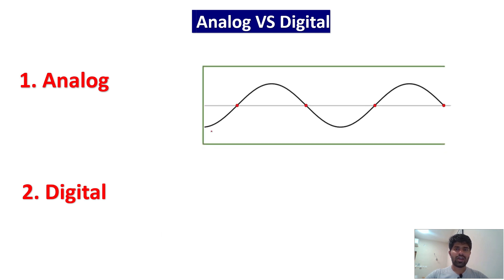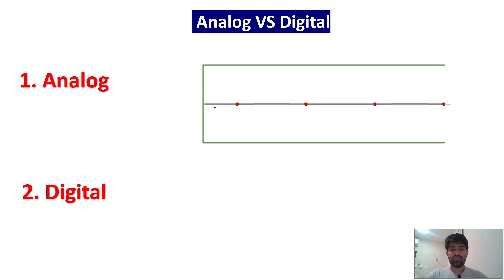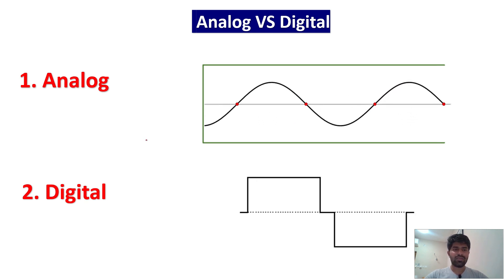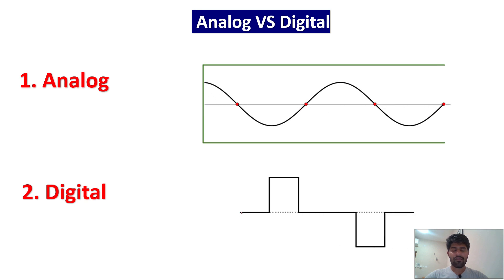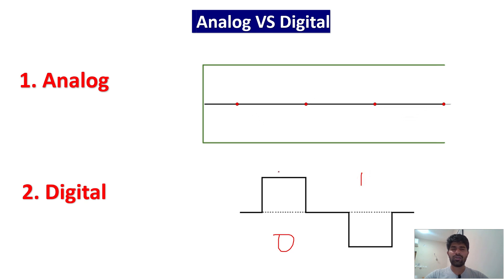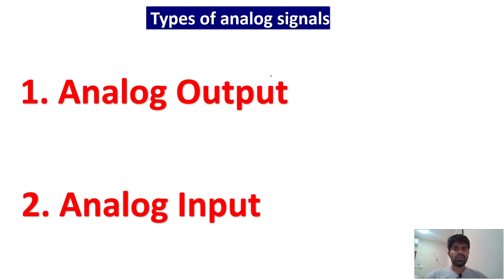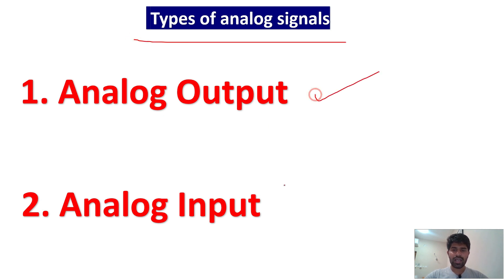So for analog, this is the analog waveform — we call it a sine wave — it will be continuously varying. But if you go for digital, whether it will be zero or one, that's it. There will be no change. The types of signals are analog output and analog input.